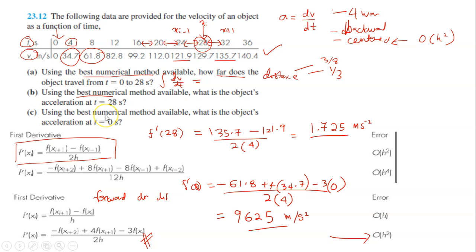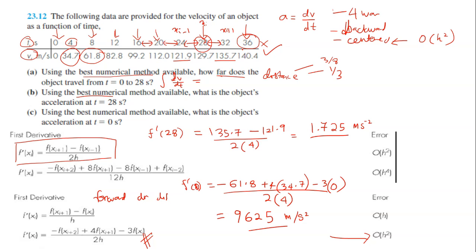To summarize: if you are given a set of data in a table and need to find the derivative at the first data point, use forward difference because there is no backward data. If finding the derivative at a middle point, use centered difference because it is more accurate. If finding the derivative at the last data point — for example when t equals 36 — use backward differentiation. You will grasp this idea better with more practice exercises. Thank you.